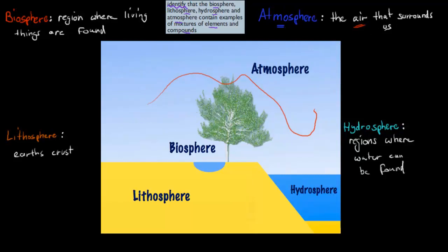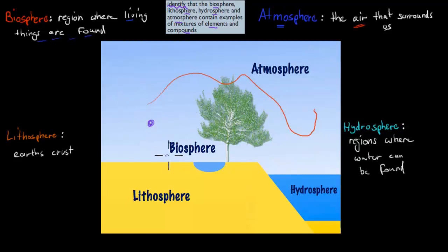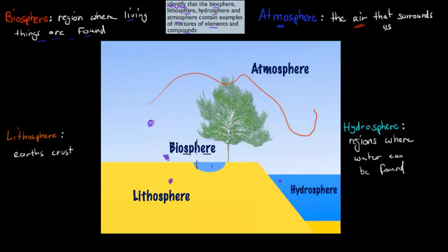Now the biosphere is the region where living things are found. Where can we find living things? Well, we can find living things some of them in the atmosphere, some on the ground, some inside rock, and some inside water. So the biosphere is any area where we can find living things, and it usually encompasses parts of the atmosphere, lithosphere, and hydrosphere.